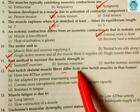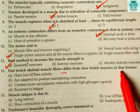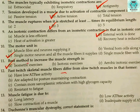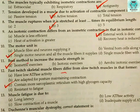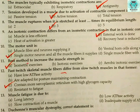Number twelve: fast-twitch skeletal muscle fibers differ from slow-twitch muscles in that the former — (a) have low ATPase activity, (b) are adapted for posture-maintaining contraction, (c) contain more sarcoplasmic reticulum with high glycogen capacity, or (d) are resistant to fatigue? The answer is (c): they contain more sarcoplasmic reticulum with high glycogen capacity, and that's why they are called fast-twitch skeletal muscle fibers.